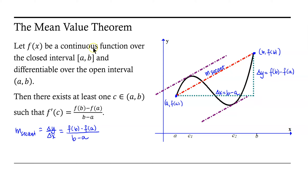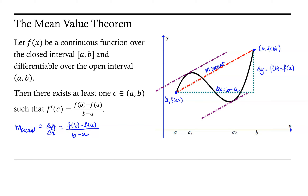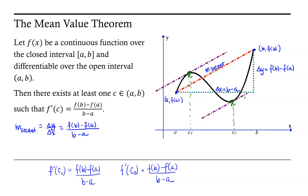So the mean value theorem tells us there is at least one c in between a and b such that the slope of the tangent line is equal to the slope of the secant line. You could also think of it as the tangent line to the curve being parallel to the secant line. We can see that borne out in our graph — there are two locations, c1 and c2, where the tangent line to the curve is parallel to the given secant line. So f prime at c1 equals the quantity f of b minus f of a over the quantity b minus a.